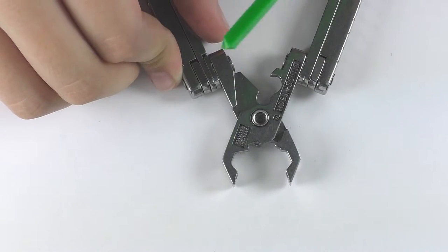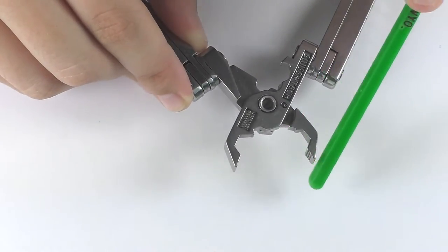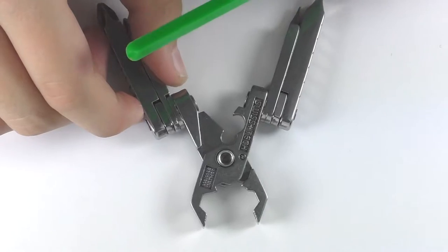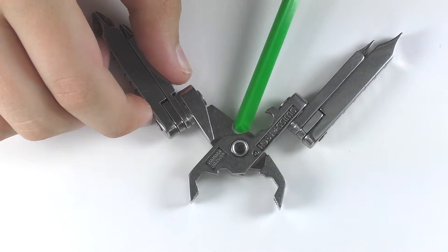You have a wire cutter right here. And you have pliers in here. And you also have a wire stripper in the same part of the wire cutter.